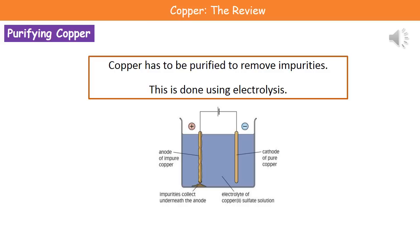We pass electricity through that solution. As a result we get pure copper forming on the cathode, and the impure copper anode is then broken down with the impurities collecting underneath it.